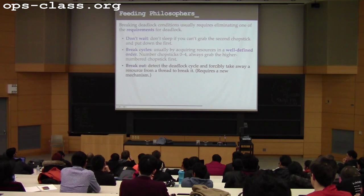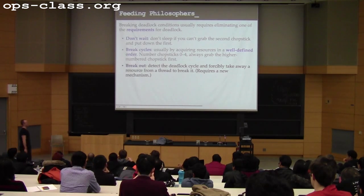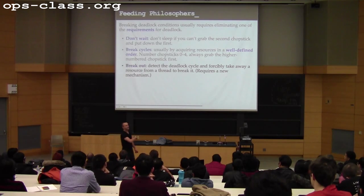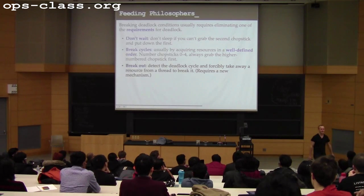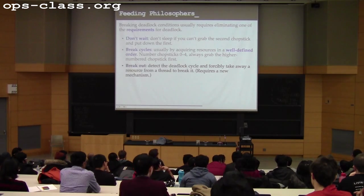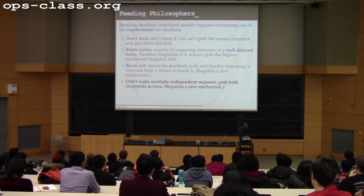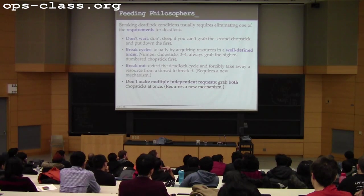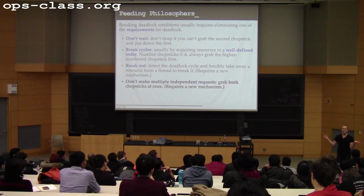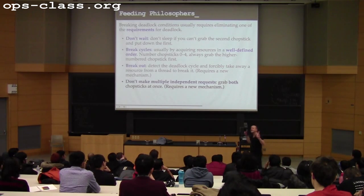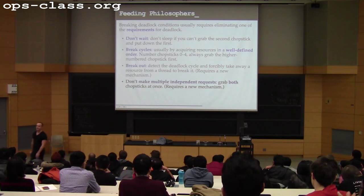The other solutions — breaking out by preempting resources (like yanking a chopstick away) or requiring all resources to be acquired simultaneously — require new mechanisms we don't really have. There's no 'lock slap' call. Requiring simultaneous acquisition of multiple locks might be possible for two, but hard to write generally in C. Any questions about deadlock?